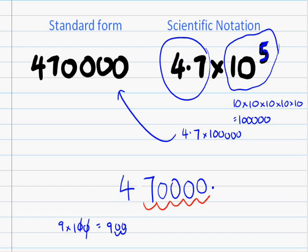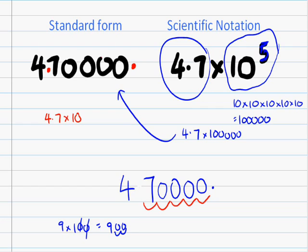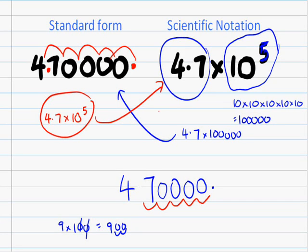Now if I want to take a standard form number like 470,000 and change it into scientific notation, I look at where I'd want to place the decimal point — which would be just there, making it 4.7. I write 4.7 times 10 to the power of something, and the exponent is how many times I need to move the decimal place to get from here to there: 1, 2, 3, 4, 5 times. So it's 4.7 times 10 to the 5. Pretty easy.